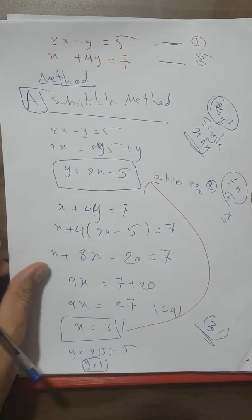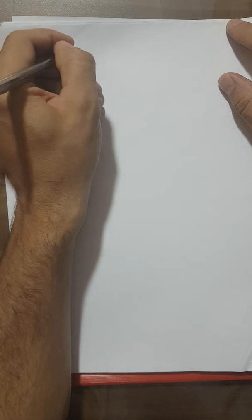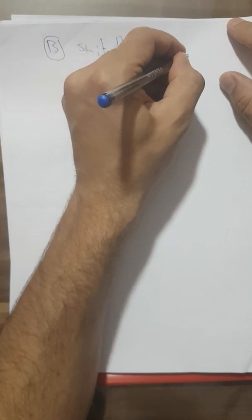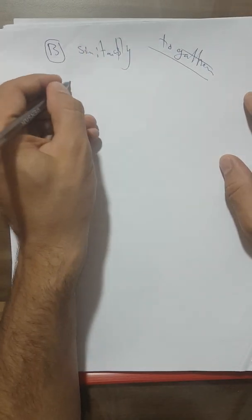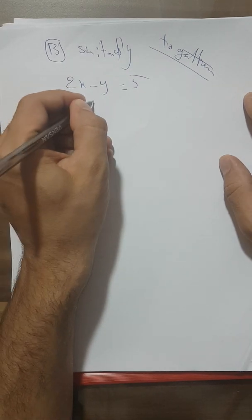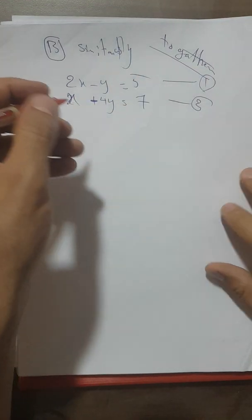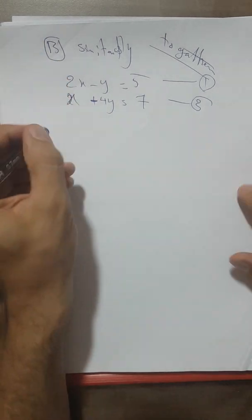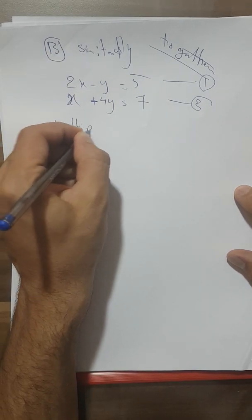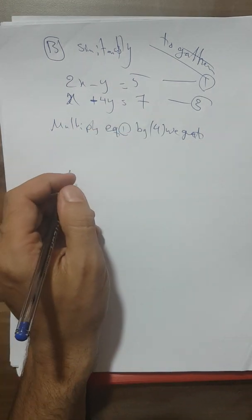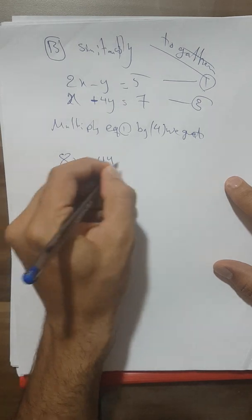Now I'm going to solve this using the second method: the simultaneous (elimination) method. We have 2x minus y equals 5 (equation 1) and x plus 4y equals 7 (equation 2). We multiply equation 1 by 4 to get 8x minus 4y equals 20.